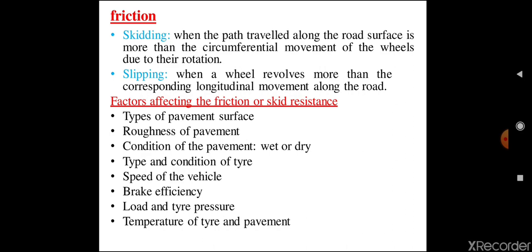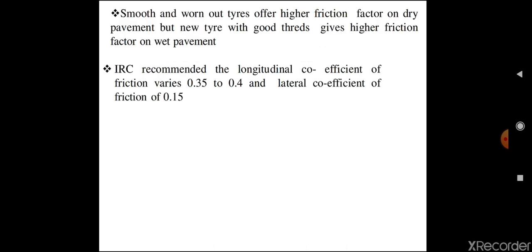If the friction between wheel and pavement is more, the vehicle will come to rest as soon as the brake is applied. If frictional resistance is less, when the brake is applied the vehicle starts skidding. Similarly, when the vehicle is fully loaded, friction will be more between the contact surface of wheel and pavement. When the temperature of a tire is high, friction will be more and therefore skidding of the vehicle may also be more. These are the factors on which the frictional coefficient or skid resistance depends.